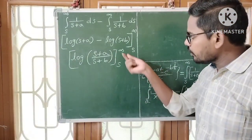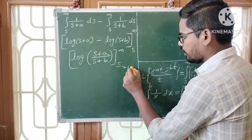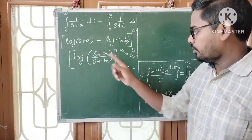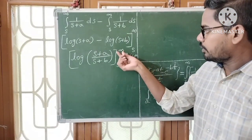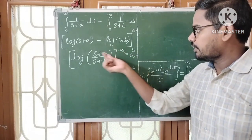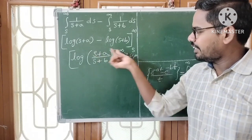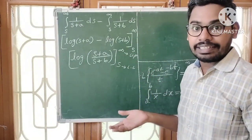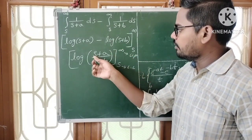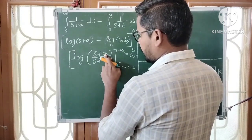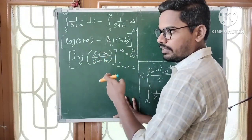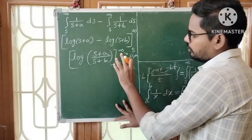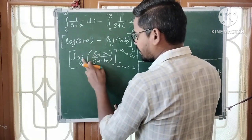Applying the upper limit (s → ∞): substituting infinity gives infinity+a and infinity+b, which gives infinity/infinity — an unknown value. To resolve this, take s common from numerator and denominator. In the numerator s common gives (1 + a/s), and in the denominator s common gives (1 + b/s). We know that finite divided by infinite equals 0, so a/∞ = 0 and b/∞ = 0.